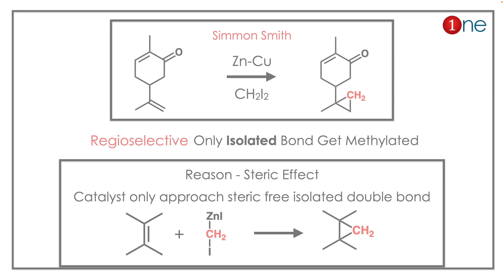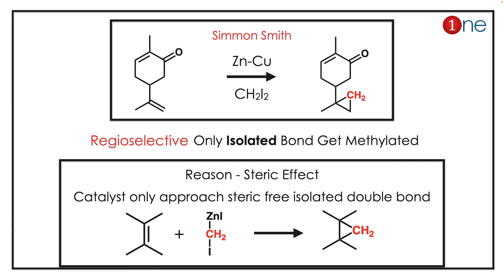The answer is the Simmons-Smith reaction. It's a methylenation of the isolated double bond. The reason for the reaction at the isolated double bond is due to the intermediate which forms a steric-free nature. So only the isolated double bond is steric free, and therefore the methylenation will occur on the isolated double bond.